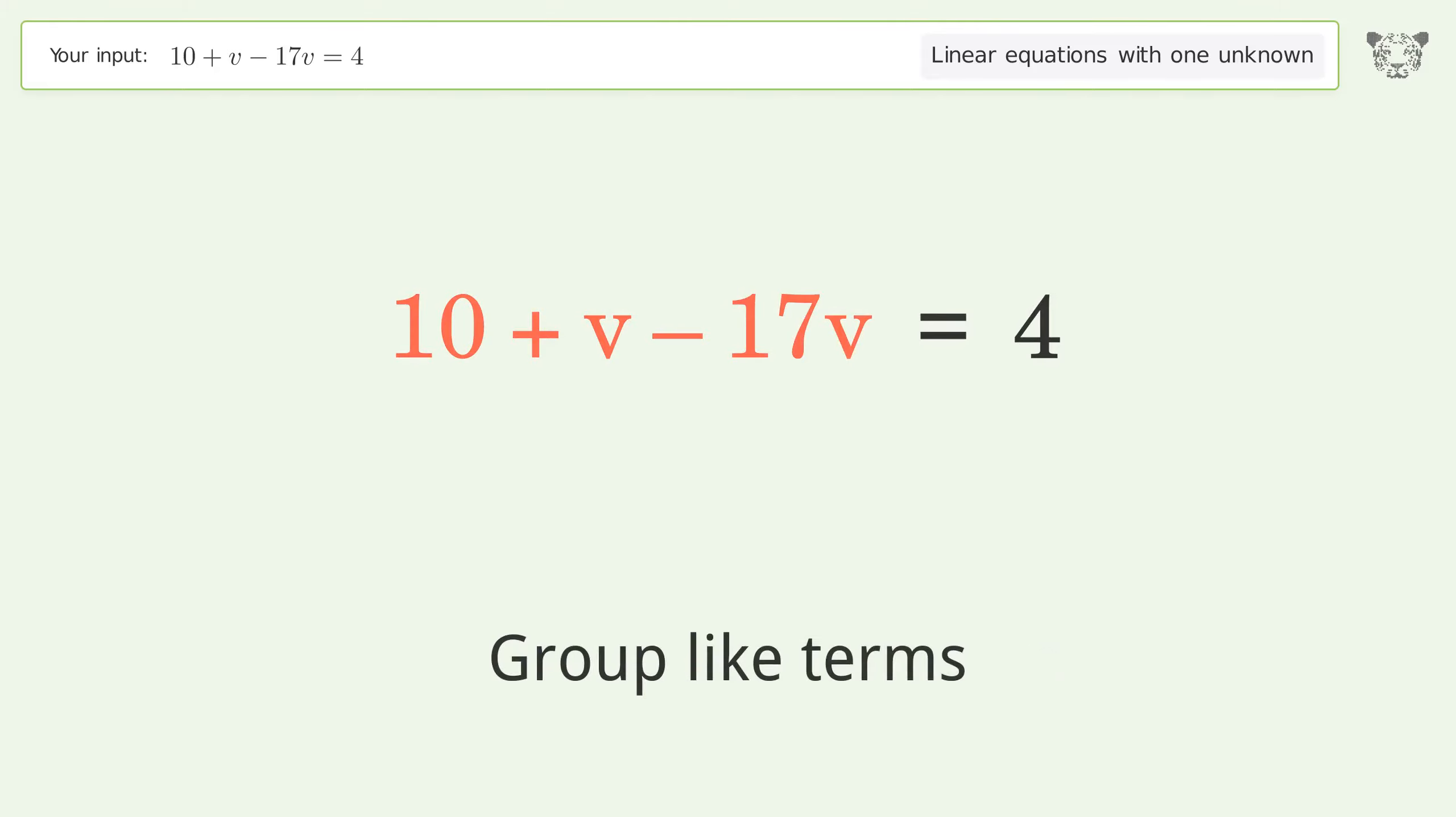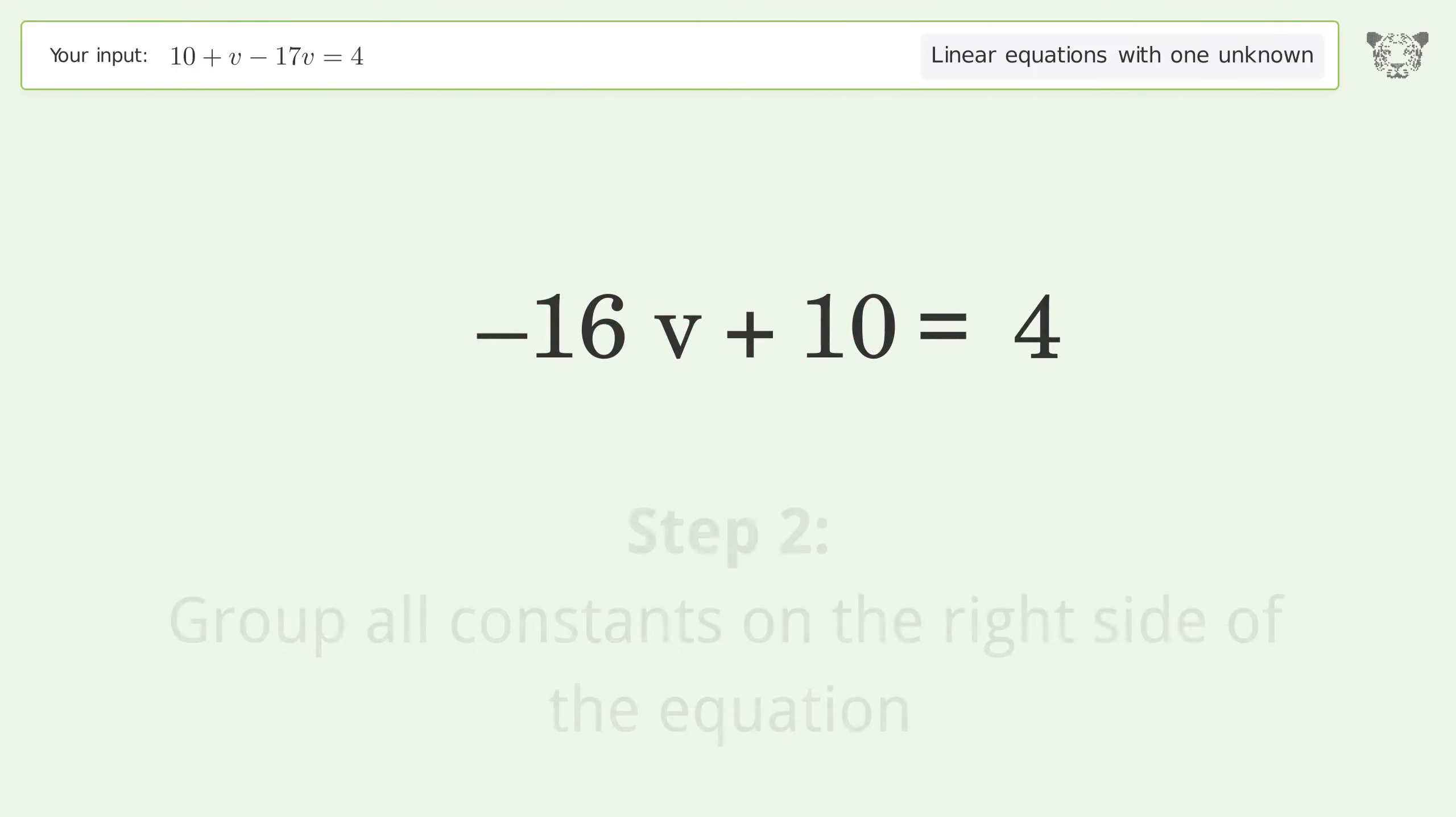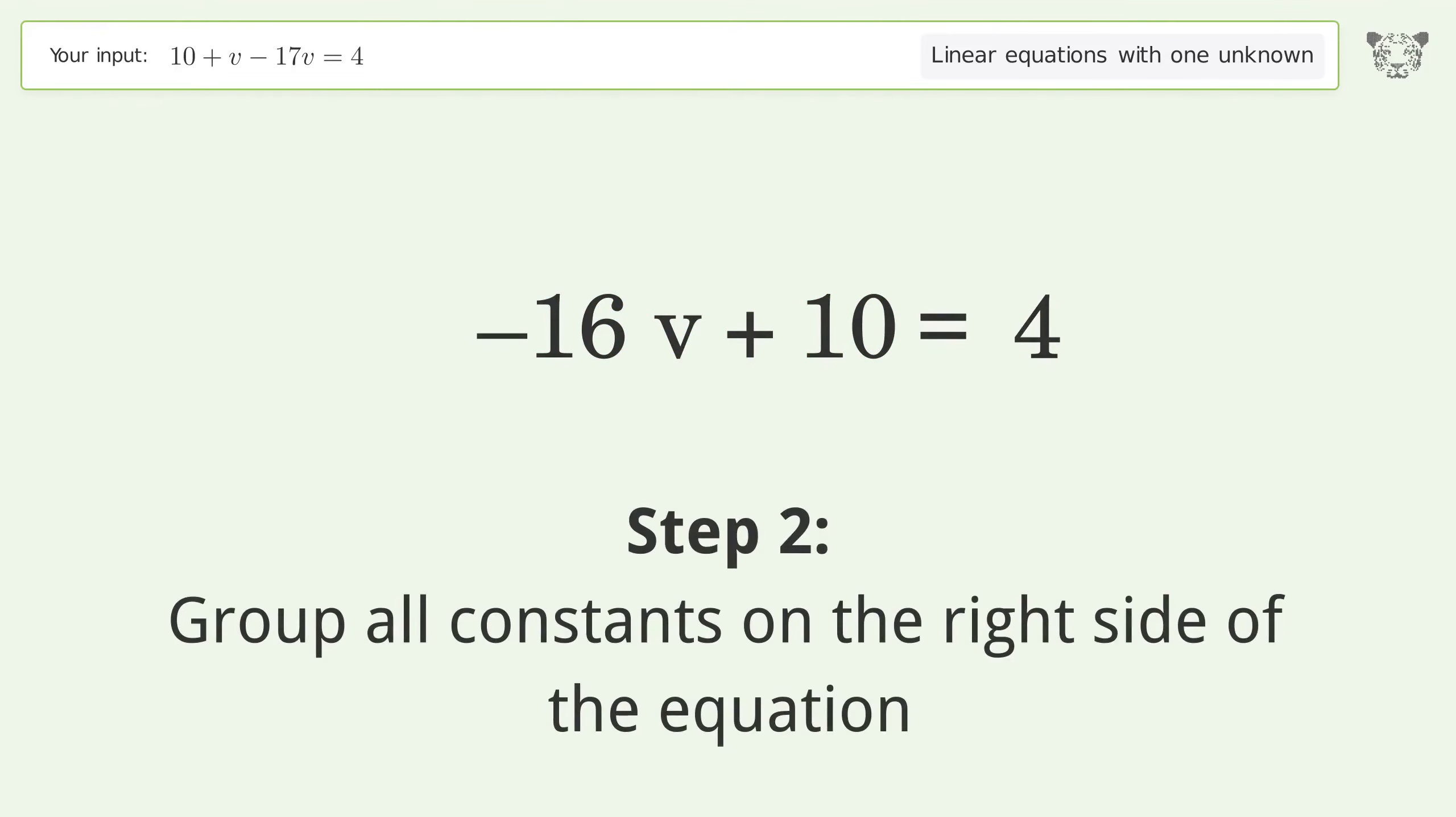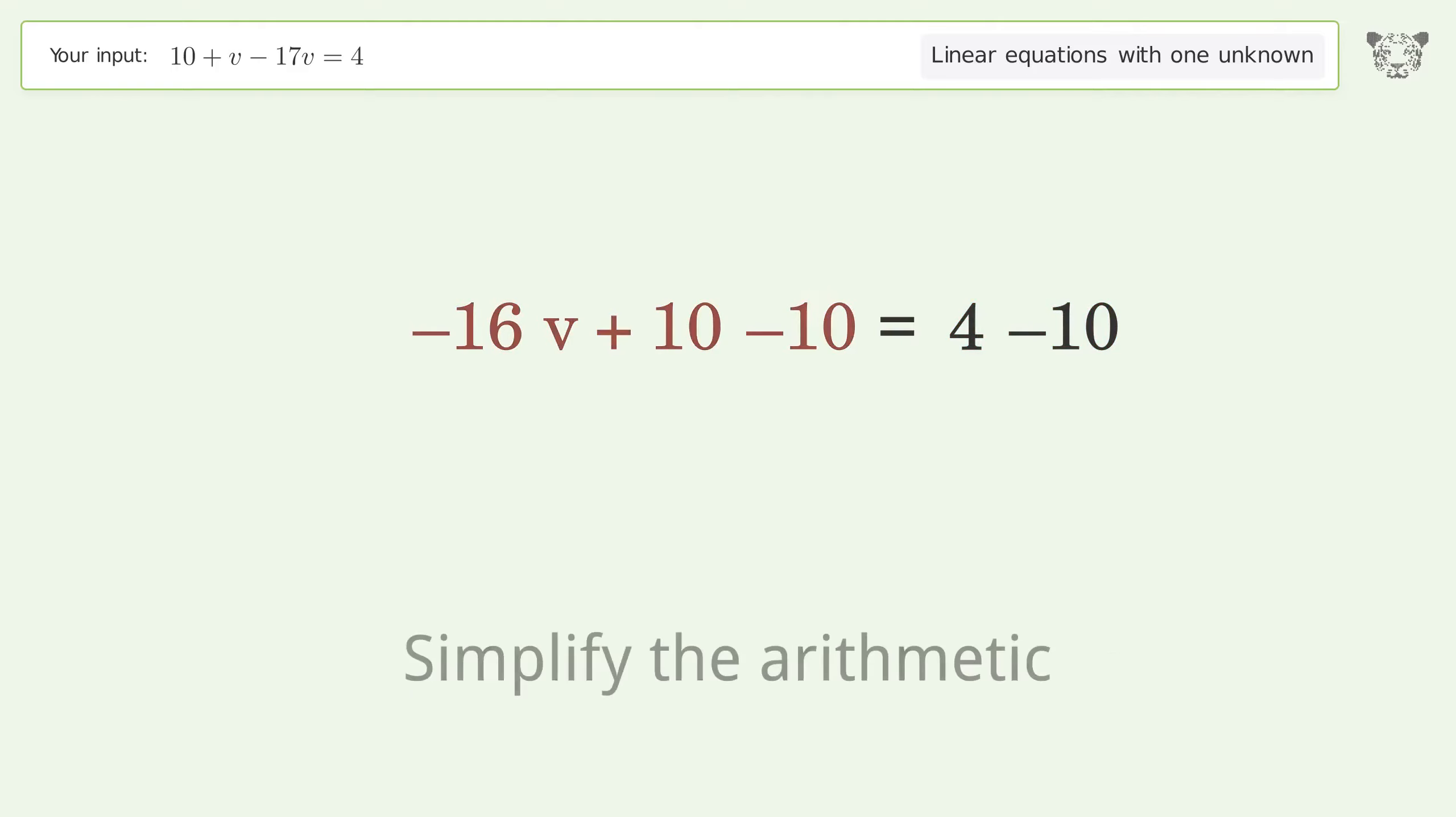Group like terms. Simplify the arithmetic. Group all constants on the right side of the equation. Subtract 10 from both sides. Simplify the arithmetic.